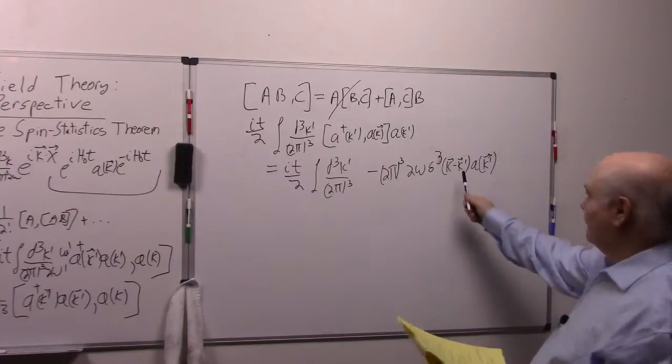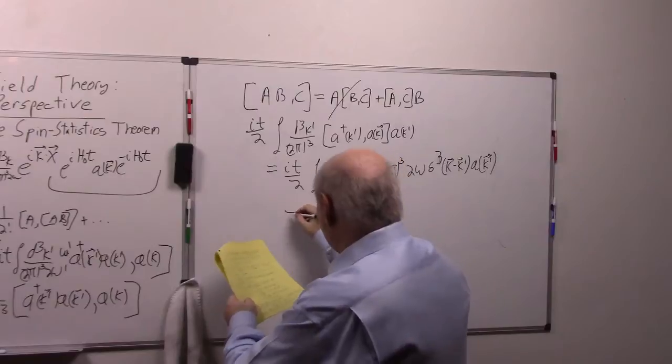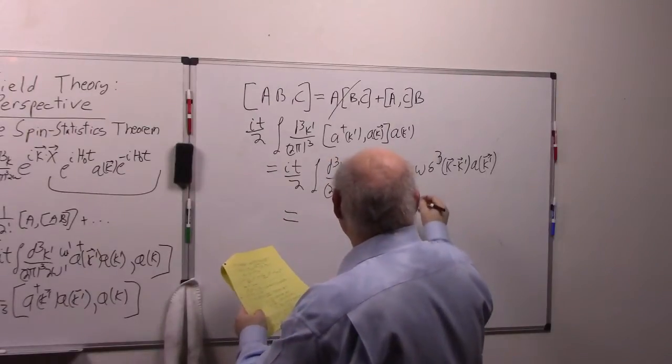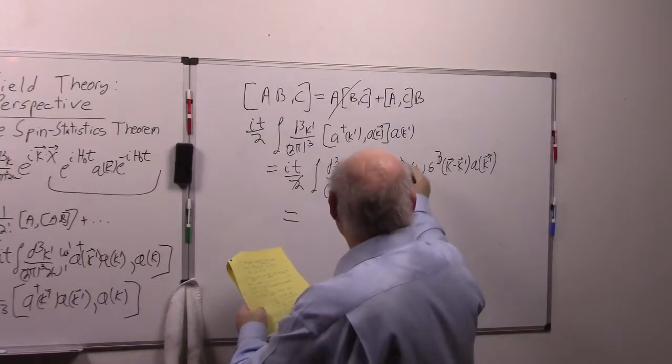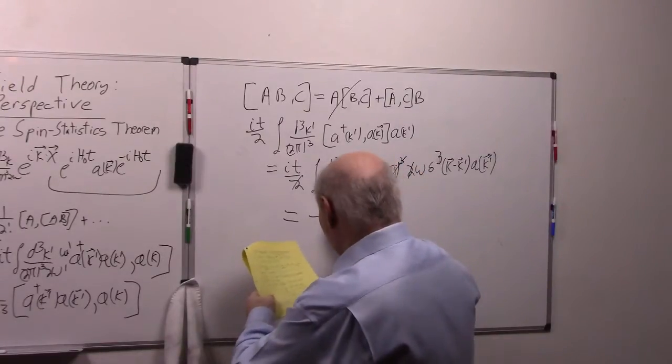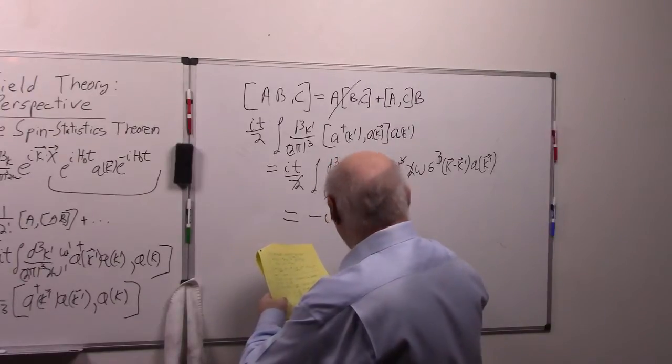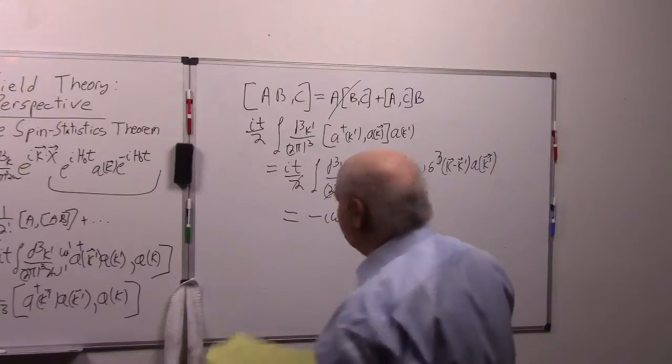So this is equal to—the minus sign is because we have A†A instead of AA†. And since we have this delta function it takes care of the integral and this is just equal to—notice this 2 cancels this. This 2π³ cancels this 2π³. We're just left with minus IωT A(k).